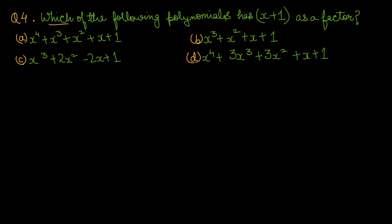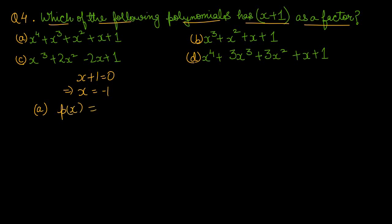Question number 4: which of the following polynomials has x plus 1 as a factor? इसमें से कौन सा polynomial है जिसका factor x plus 1 हो। तो हम x plus 1 को 0 से equal करेंगे, यहाँ से x = -1। अब यह हम हर polynomial में fit करके देखेंगे, जिसमें answer 0 आएगा वो इसका factor बन जाएगा। Option A की polynomial है: x⁴ + x³ + x² + x + 1।